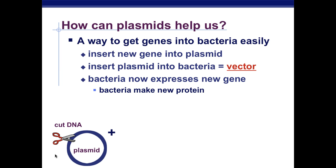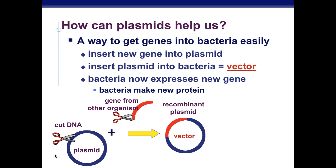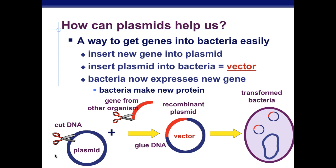Here's a little diagram of how this works. You can cut the plasmid DNA, and you can cut the gene out from another organism that you want to add in. When you put the plasmid and the gene from the other organism together, you've created a vector or your recombinant plasmid. You have to glue the DNA together to keep the other gene in there. Now you have a transformed bacteria — this bacteria with the new vector is going to multiply and reproduce whatever gene was added from the other organism.